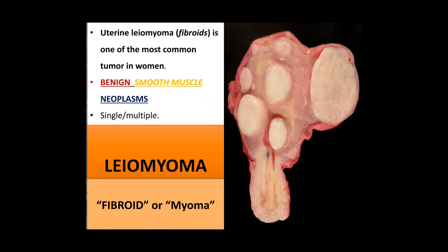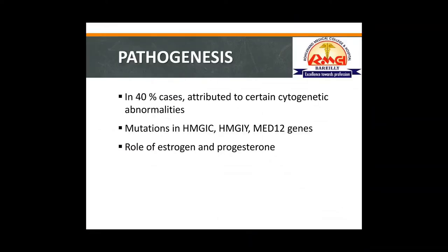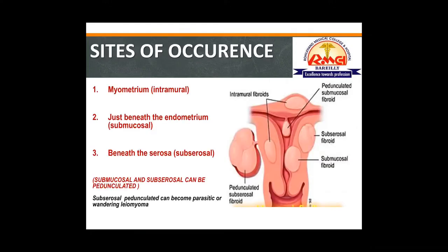Leiomyoma is also known as myoma. In the pathogenesis, certain cytogenetic abnormalities are seen in 40% of cases, including mutations in HMGIC, HMGIY, and MED12 genes. Estrogen and progesterone also play a role: leiomyoma occurs in the reproductive age group, is less common in postmenopausal women, and its size increases during pregnancy — reflecting steroid hormone receptors present in the proliferating myometrial cells.